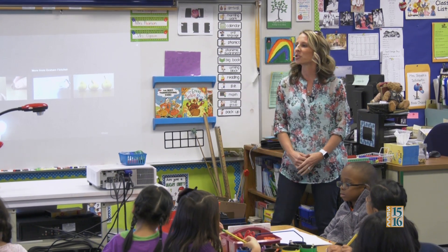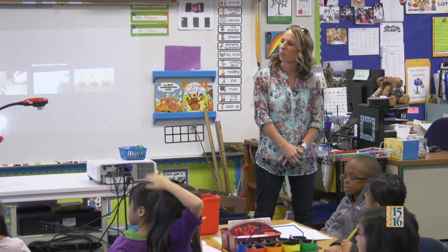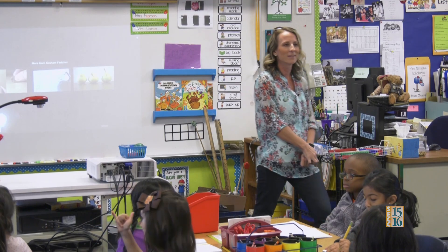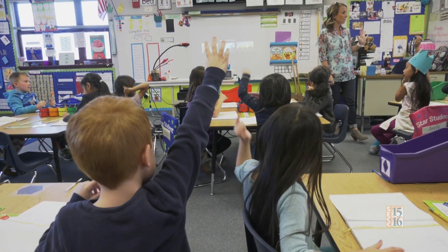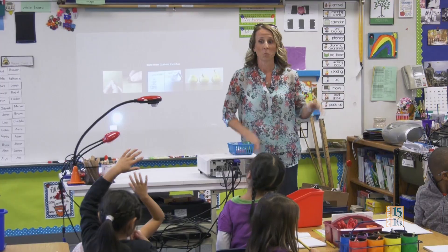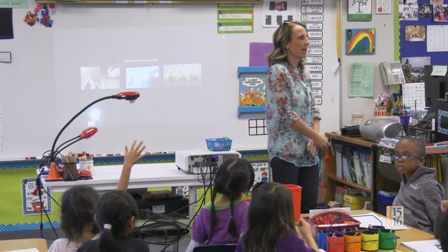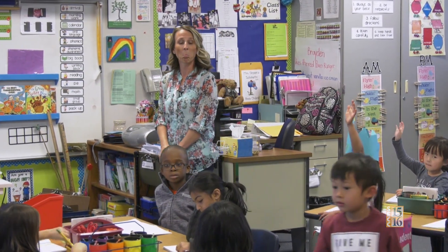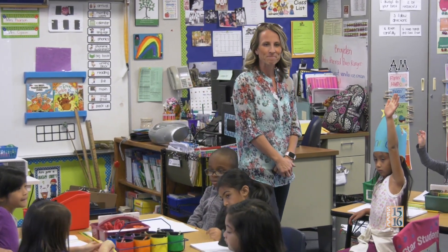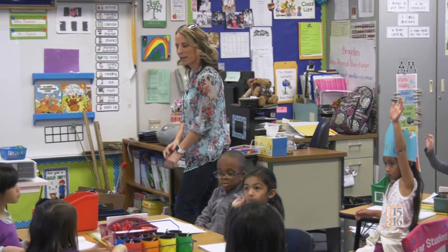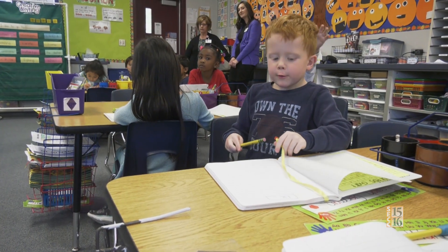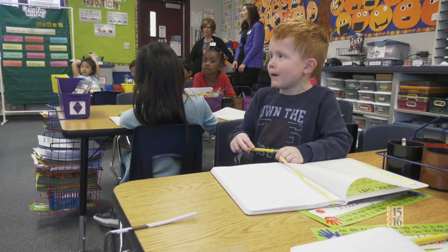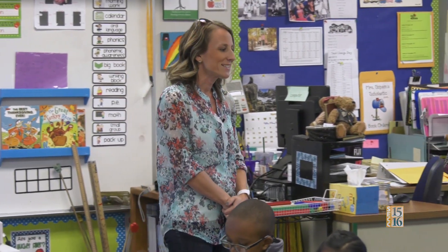Who'd like to share their estimate? Wyatt thinks 10. How many agree that's a good estimate? How many think five could have broken — is that possible? Gurjia says eight — could eight be a reasonable guess? Isaiah, what did you put? Twelve. Why? Because my mom usually gets egg packs with twelve eggs in them. So Isaiah says his mom usually buys eggs in a carton with twelve.